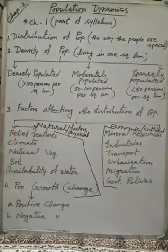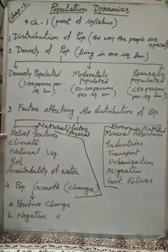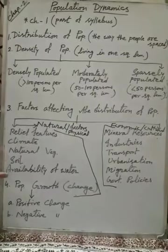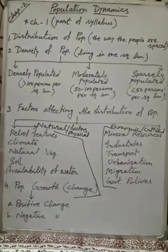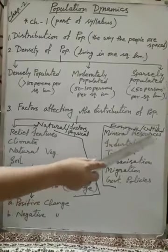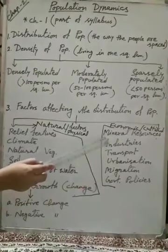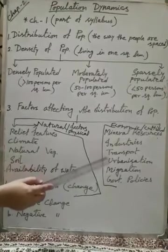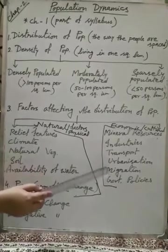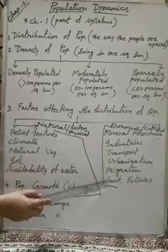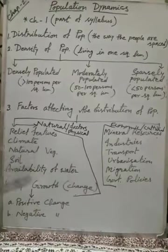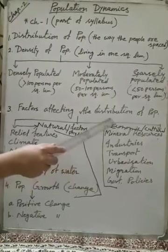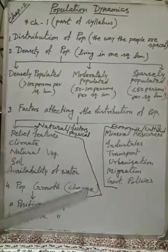Under physical factors, we are getting: relief, climate, natural vegetation, soil, and availability of water. And under economic or cultural factors, we are getting: mineral resources, industries, transport, urbanization, migration, and government policies. On the basis of all these factors, distribution of population varies — somewhere it is high, moderate, or low.